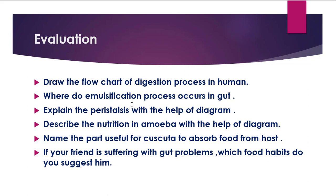For evaluation, children, try to write these questions in your notebook and answer them, then send your answers to your teachers. Draw the flowchart of the digestion process in humans. Where does the emulsification process occur in the gut? Explain peristalsis with the help of a diagram. Describe the nutrition in amoeba with the help of a diagram. Name the part useful for Cuscuta to absorb food from the host. If your friend is suffering with gut problems, which food habits do you suggest?